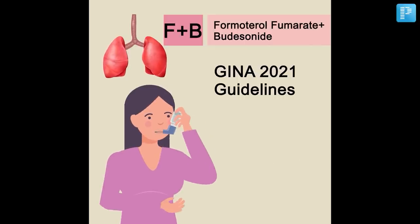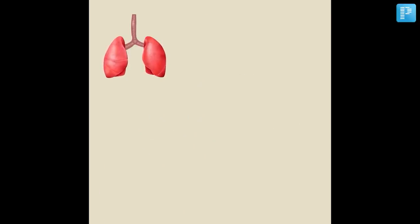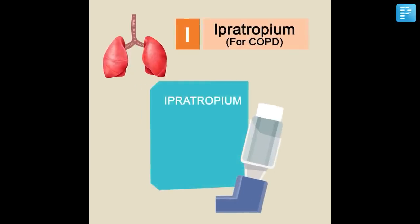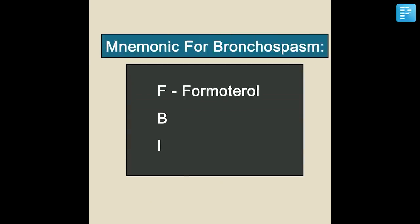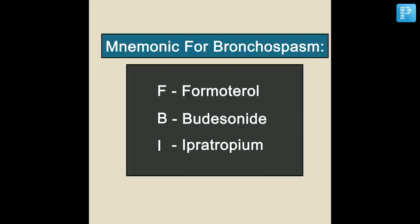However, for COPD, you shall be using LAMA — that is Tiotropium or Ipratropium. The mnemonic you can use here — I don't like mnemonics, but anyway — for the first line: FBI, that would be Formoterol, Budesonide, and Ipratropium.